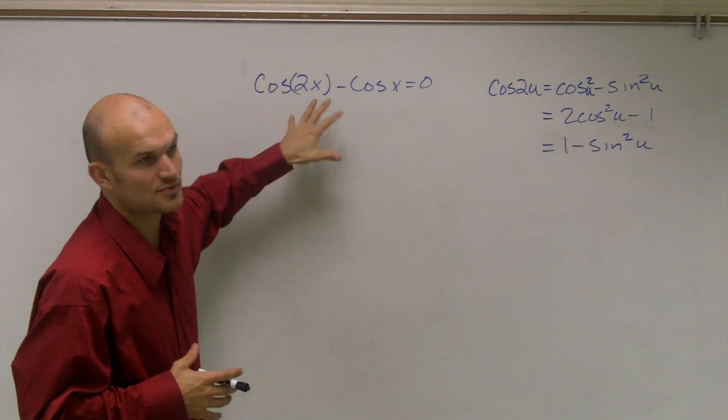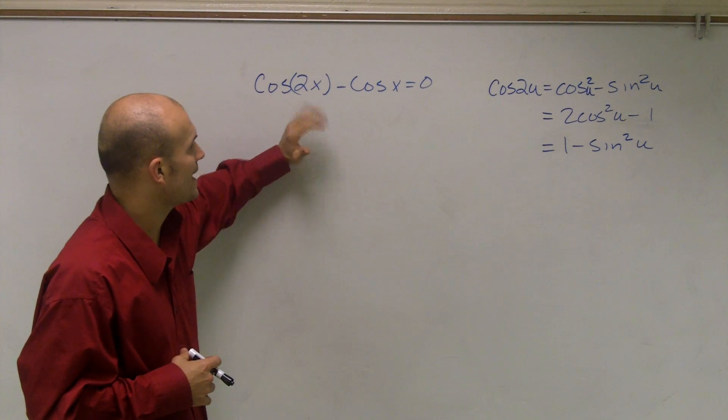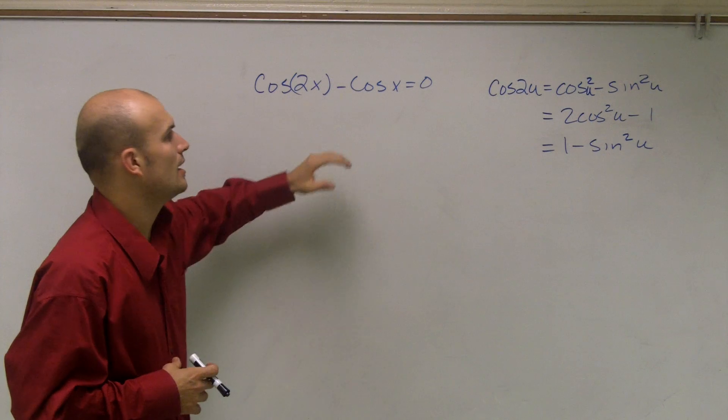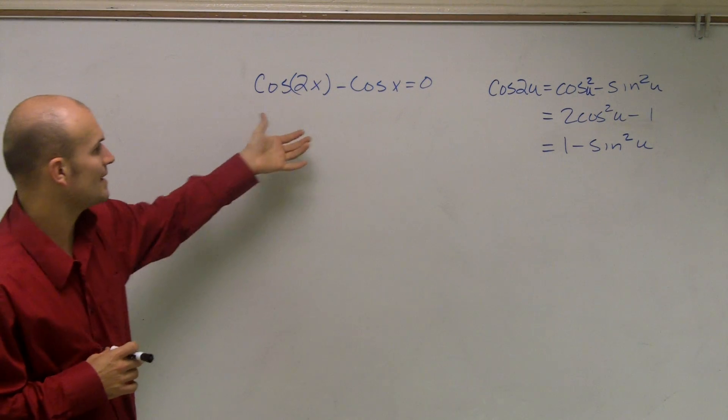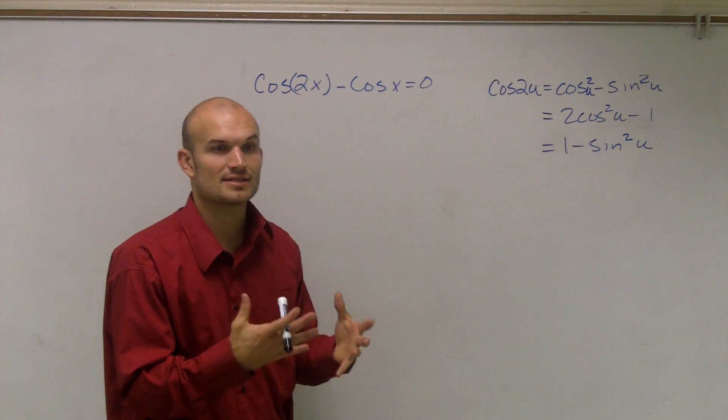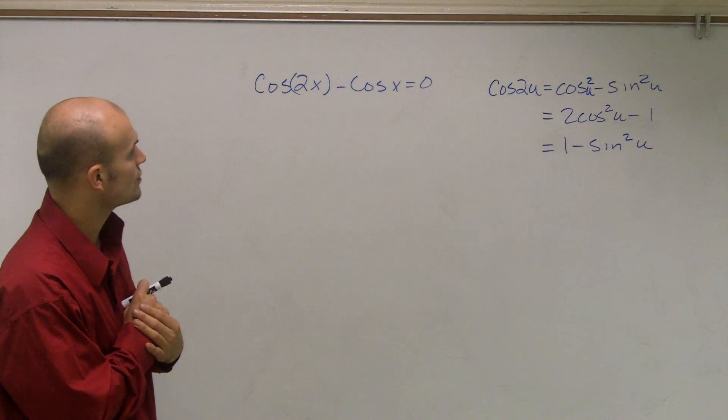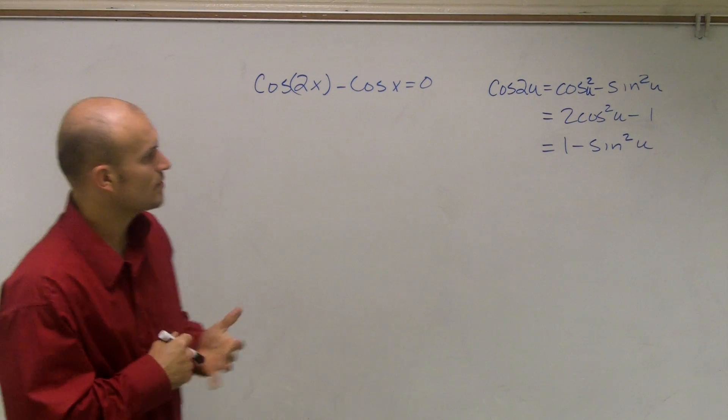I can't isolate just one cosine. I have two separate cosines in here with my variable x. So I can't combine these any further. And I can't right now factor out a cosine that's going to give me the product of two cosines that I could use. So I need to get rid of this cosine of 2x.